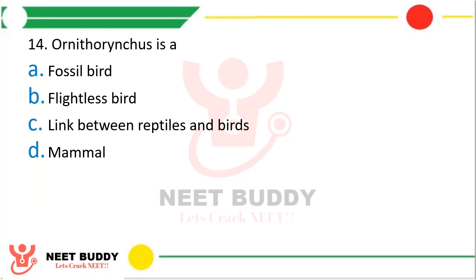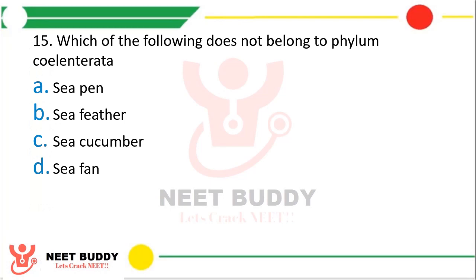Question twenty-four: Ornithorhynchus is a — option A, fossil bird; option B, flightless bird; option C, link between reptile and birds; or option D, mammal? The correct answer is option D, that is mammal. Ornithorhynchus is the scientific name of platypus.